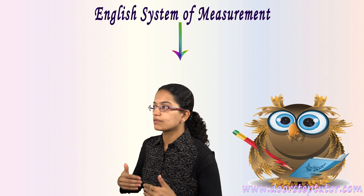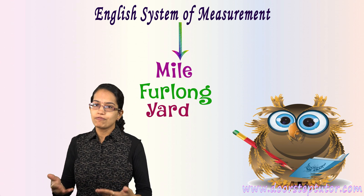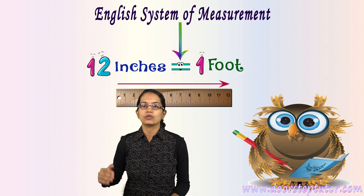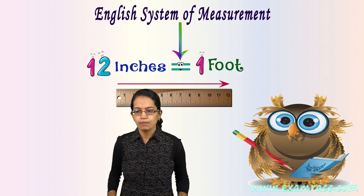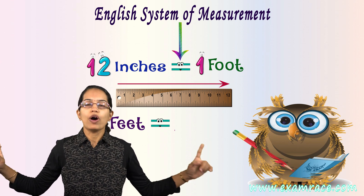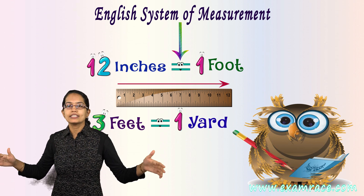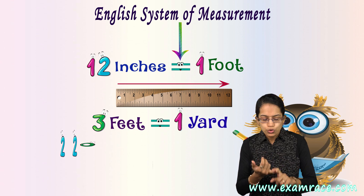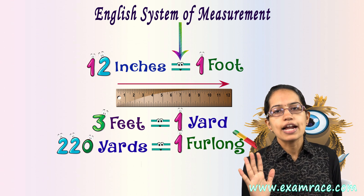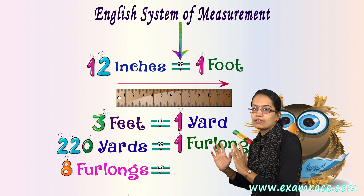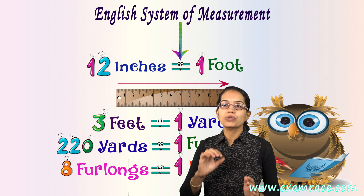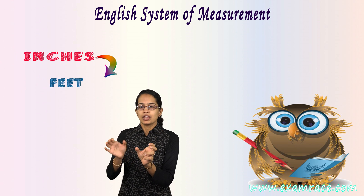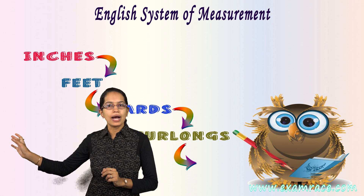The English system works with miles, furlongs, yards, and feet. 12 inches form one foot — that's the one-foot ruler you usually see. Three feet form one yard — like a yard of cloth. 220 yards form one furlong, and eight furlongs form one mile. So the units run: inch, feet, yard, furlong, and miles.